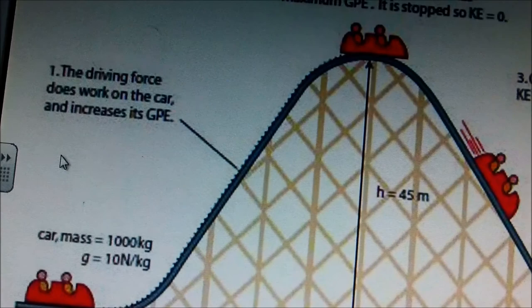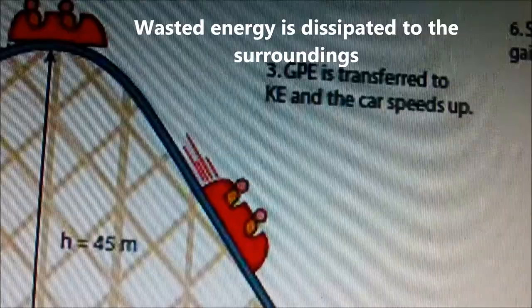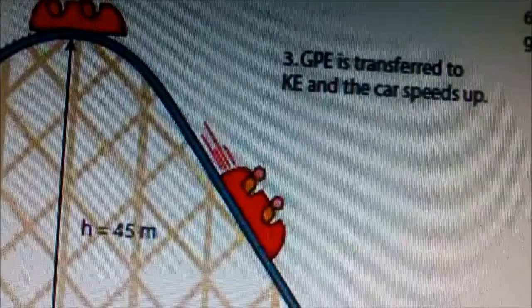In this case, as the roller coaster descends down the track, there's friction between the wheels of the car and the roller coaster track. Therefore, energy is transferred as heat and as sound.